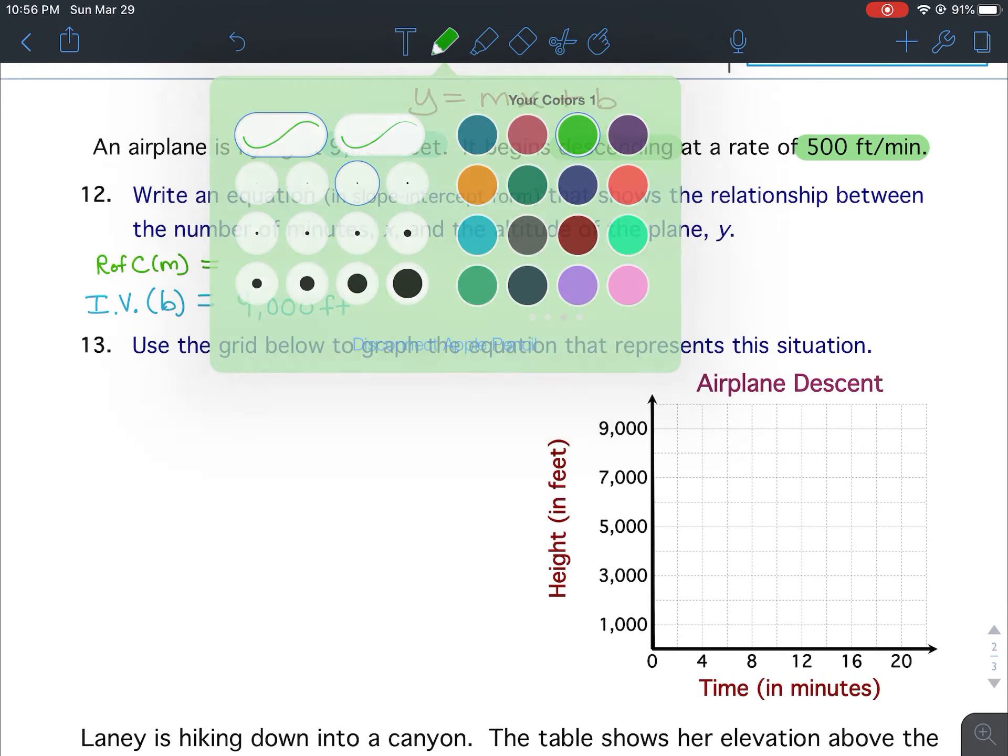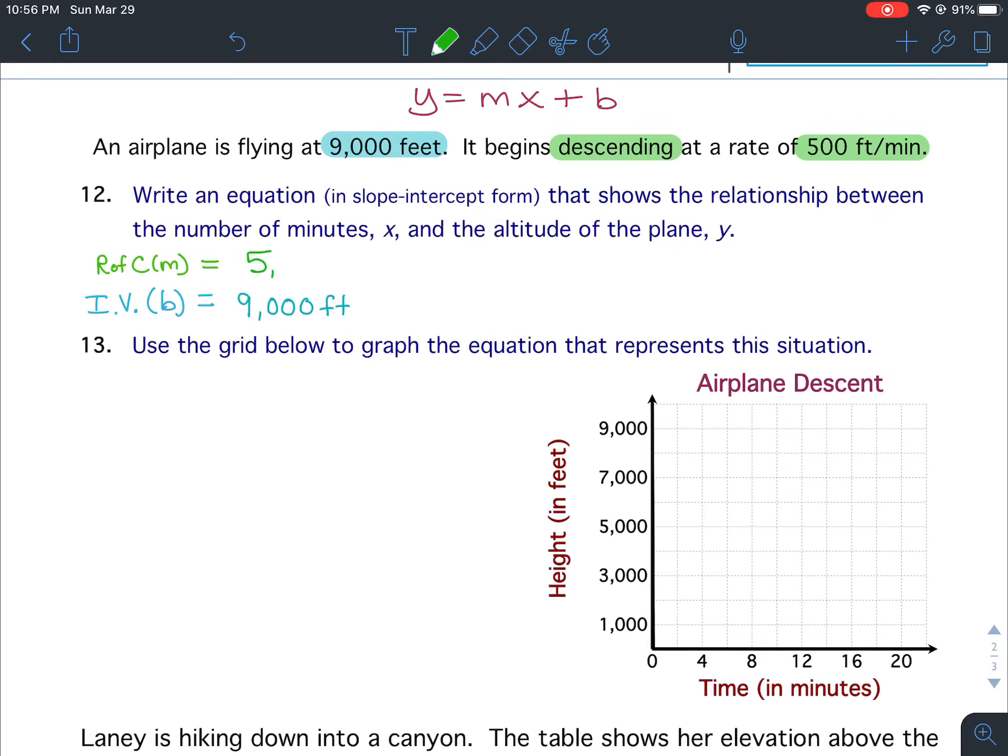Now, a lot of times I will get this answer for the rate of change. But that is not correct, because that would mean that the slope is positive. And if the slope is positive, your line would be going that direction. But because it is descending, that makes this number negative. So our rate of change is actually negative 500 feet per minute. It's descending, and that's why I had you also underline the word descending. Because it's going down, the slope has to be negative. So it's at negative 500 feet per minute.